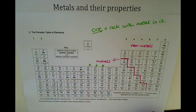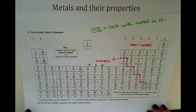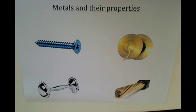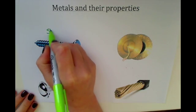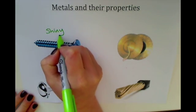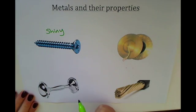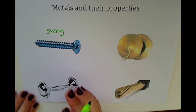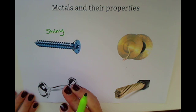First of all, all metals are shiny. Some of the reactive metals won't look shiny when you first take them out—that's because they would have reacted with the oxygen in the air and made an oxide coating on the outside, which would make them look dull.